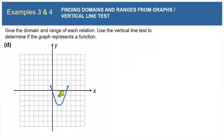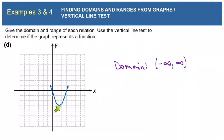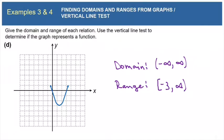In part D, we have a parabola. The graph continues forever to the left and to the right, so the domain is (-∞, +∞). The lowest y value this graph will ever reach is y = -3, and then the graph continues upward forever. So the range is [-3, +∞). And if you imagine drawing a vertical line on this graph, any vertical line only intersects the graph at one point. So this is a function.